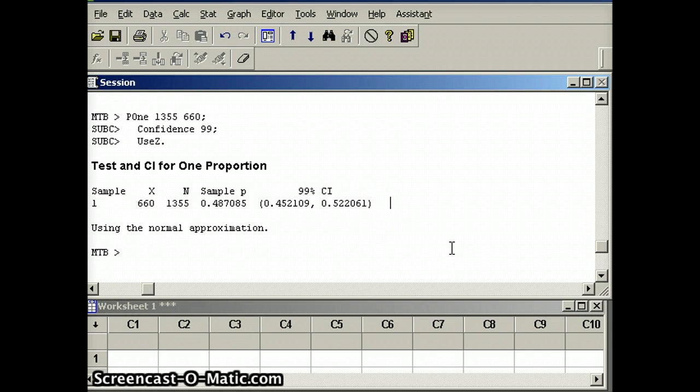So if we're looking for our width this time, the width would be how wide is the confidence interval? 0.522 minus 0.452, and what will that give me? We're going to get 0.07. So if the width is 0.07, the margin of error is half that. The margin of error is exactly what we expected it to be. The margin of error is 0.035.